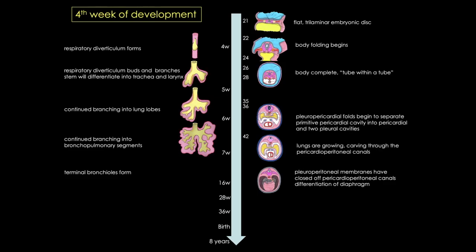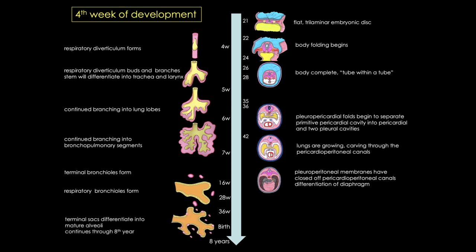If we look at our timeline, by 16 to 17 weeks all the major elements of the lungs have formed, except those involved with gas exchange. It's important to note that by this point, respiration is not yet possible, so fetuses born during this period are unable to survive. We're going to start today between 17 and 24 weeks, where respiratory bronchioles are forming. The alveoli will then begin to develop and mature, a process that can take up to eight years to complete.